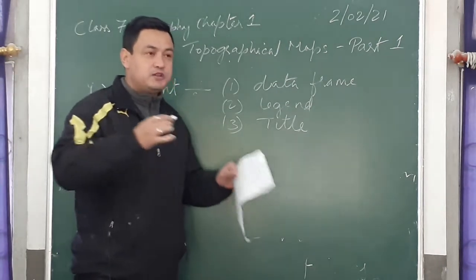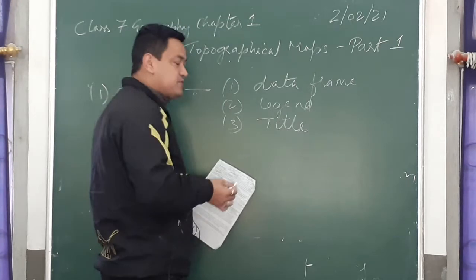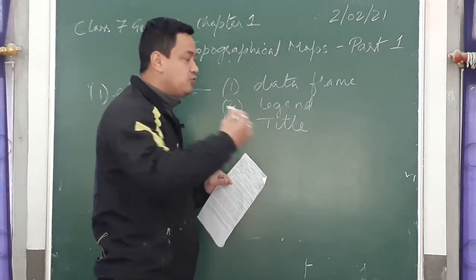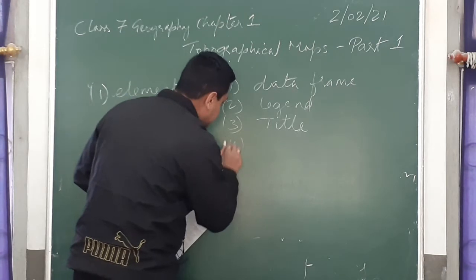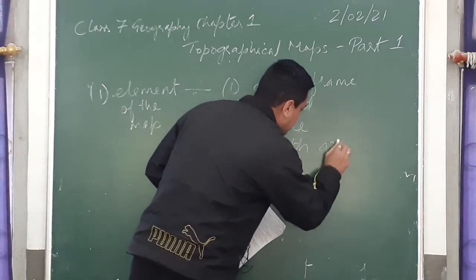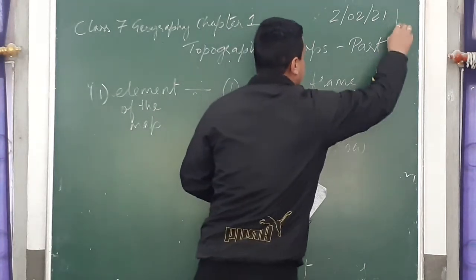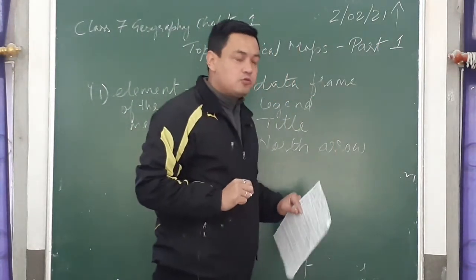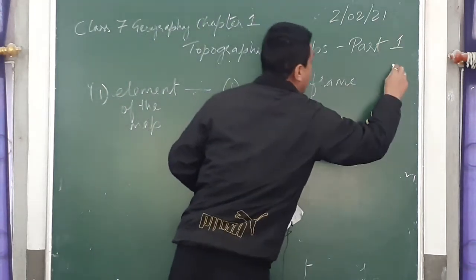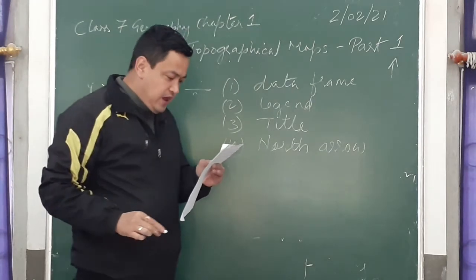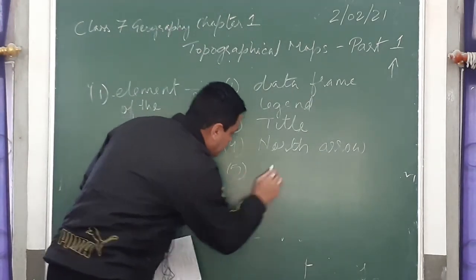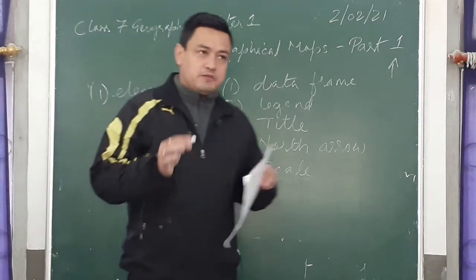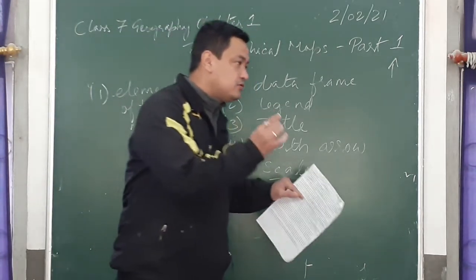The legend is found at the bottom of the map, which helps us understand the different areas that are labelled with colours in the map. The fourth element is the north line or north arrow. The north arrow is always found at the top right, pointing towards the north, shown with an upward arrow. Another element is the scale. Scale is found in different kinds of maps — most commonly in plans as well as topographical maps.